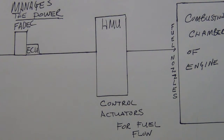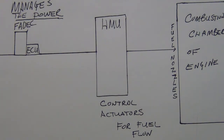Sensors throughout the entire fuel system monitor how much fuel you have — the fuel on board (FOB) shown on the ECAM display that the pilot sees. There must be level sensors sending signals to the FADEC. FADEC — Full Authority Digital Engine Control — is the brains of the whole operation. The ECU is like a translator, communicating signals from FADEC to the HMU.